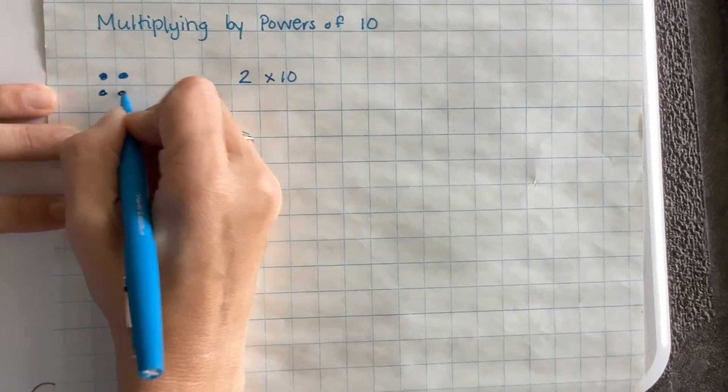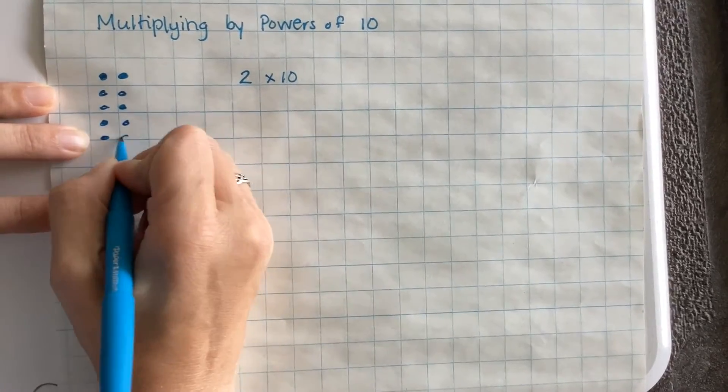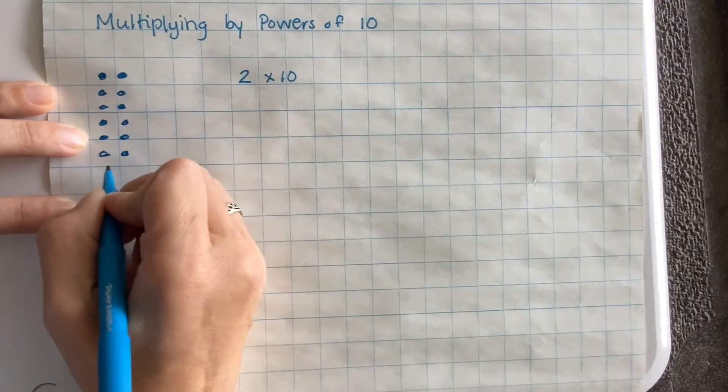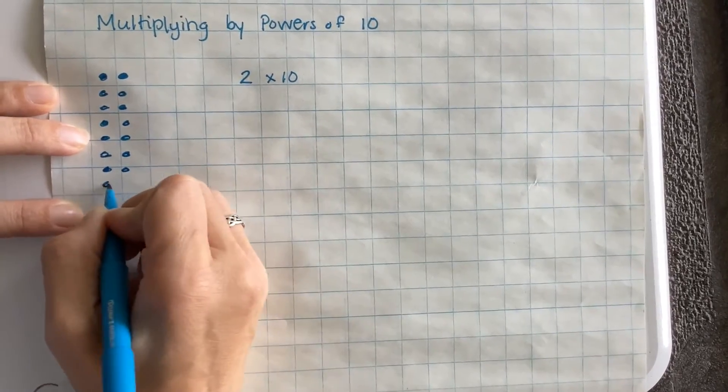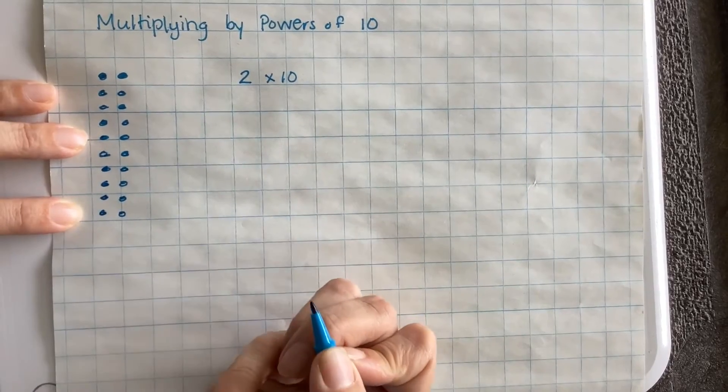So 2, 2 groups of 2, 3 groups of 2, 4 groups of 2, 5 groups of 2, 6 groups of 2, 7 groups of 2, 8 groups of 2, 9 groups of 2, and 10 groups of 2.